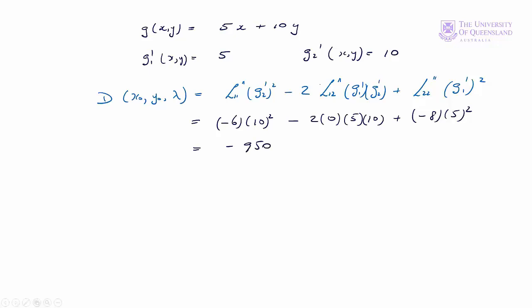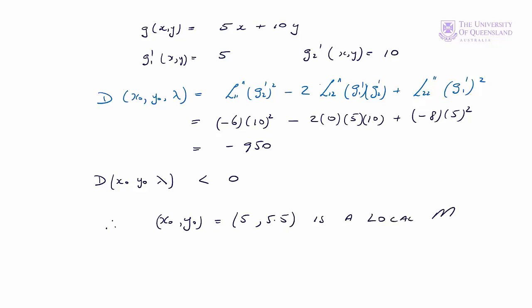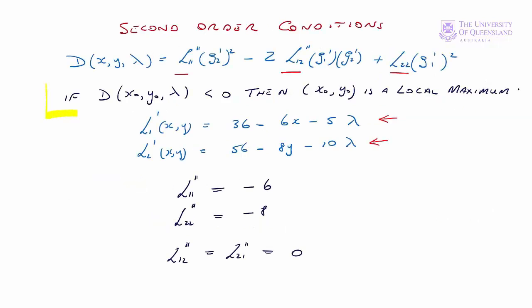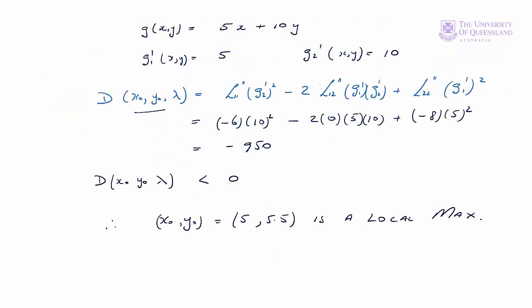Evaluated at x naught, y naught, d is less than 0. Therefore we conclude that x naught, y naught equal to (5, 5.5) is a local maximum. Note the process: first state the conditions of the test — if d is less than 0 then x naught, y naught is a local maximum; then evaluate d at x naught, y naught; and if the condition is met, conclude that point is a local maximum. We've shown x naught, y naught is a local maximum. Now we want to show it's a global maximum as well.